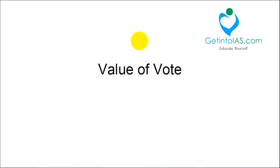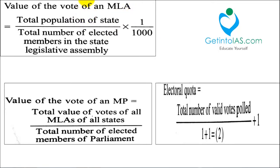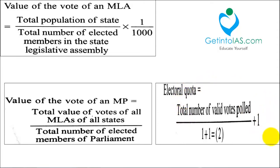There is a concept called value of vote, which is used to determine parity between the states and the centre. Fixed values are assigned using a formula for an MLA's vote and a separate formula for an MP's vote. There is also something called the electoral quota — if many candidates are contesting, only those securing this quota number are declared elected.